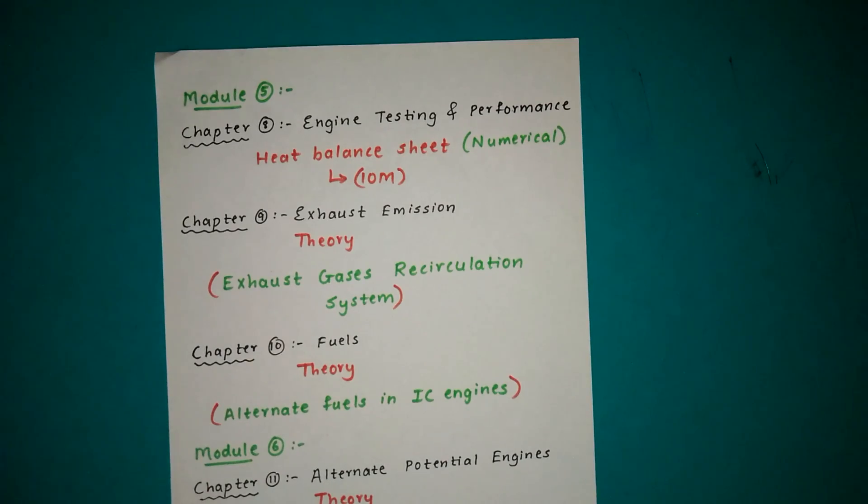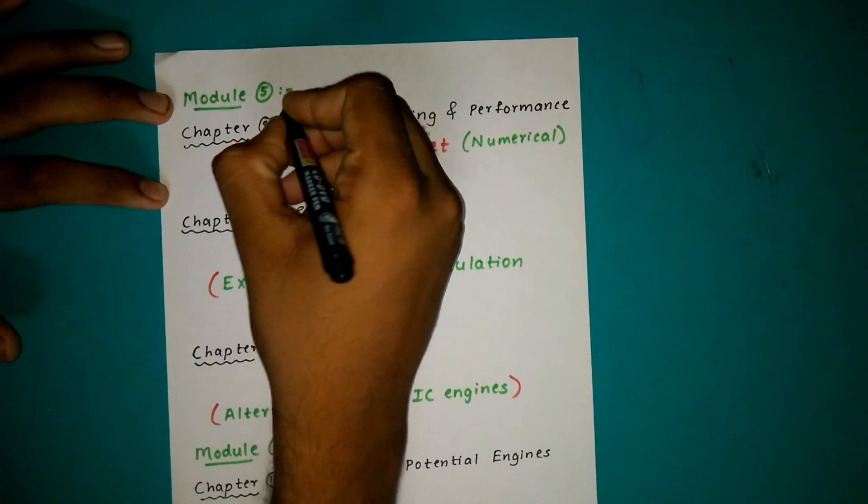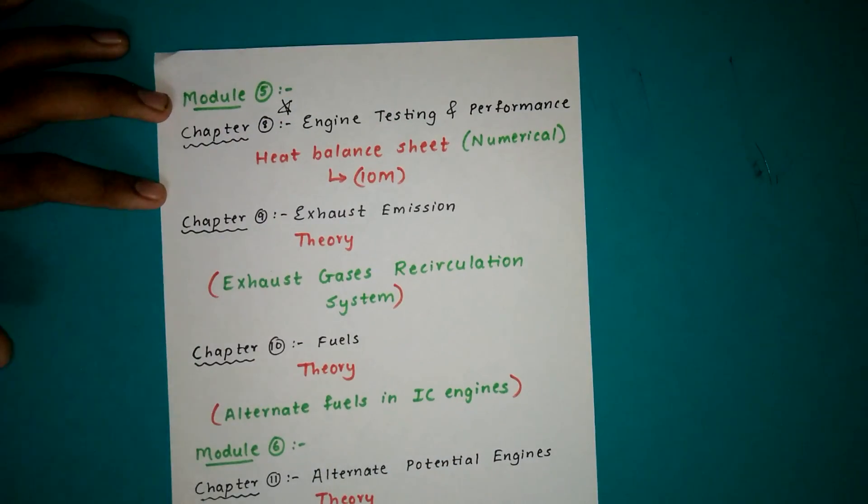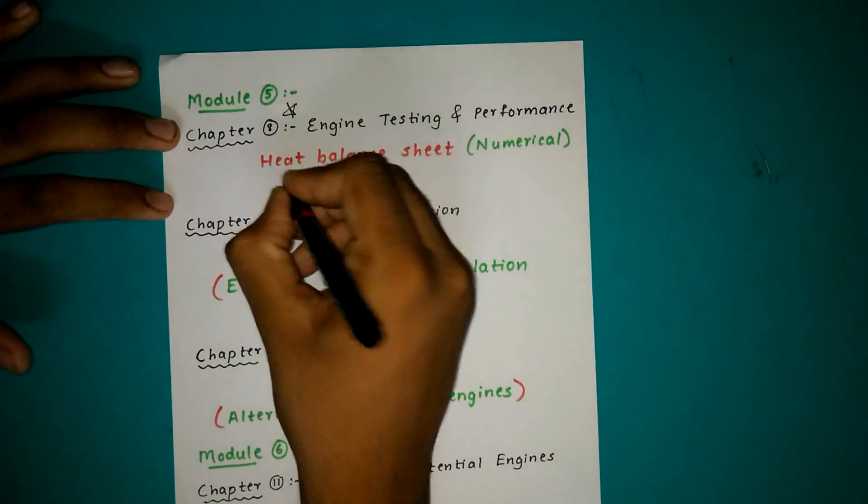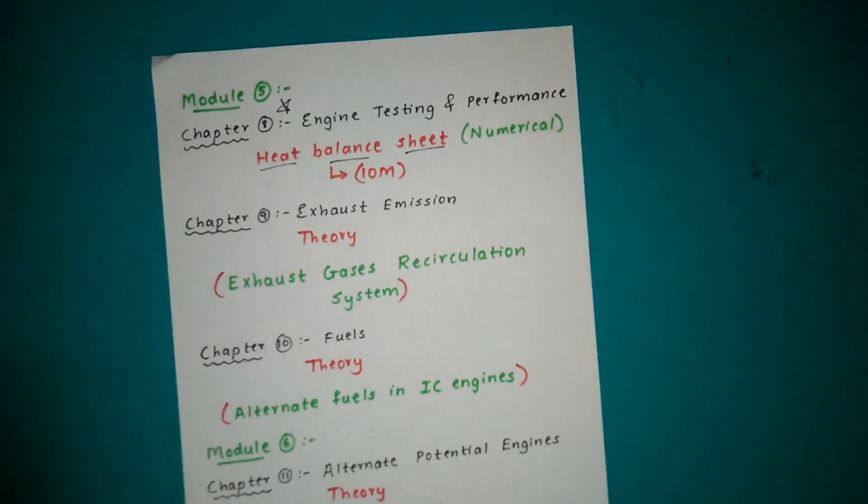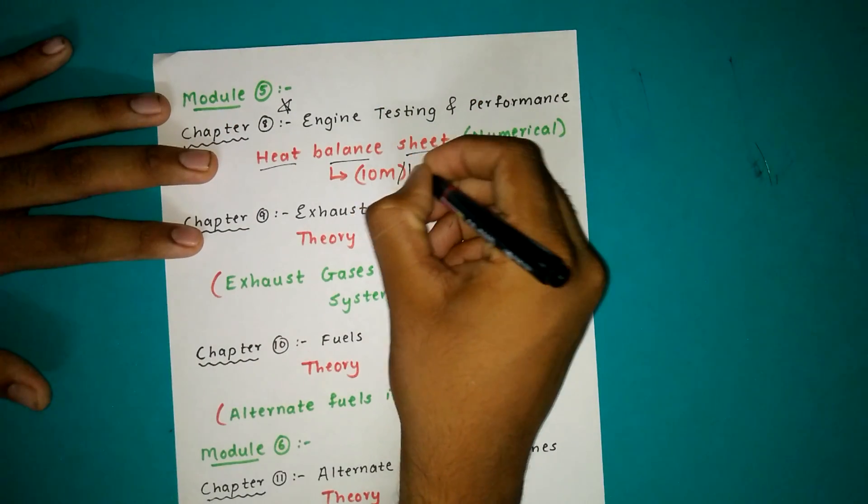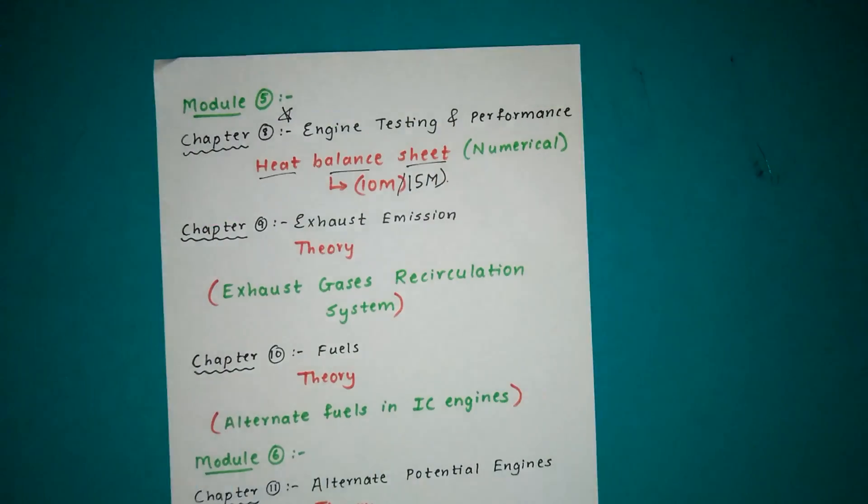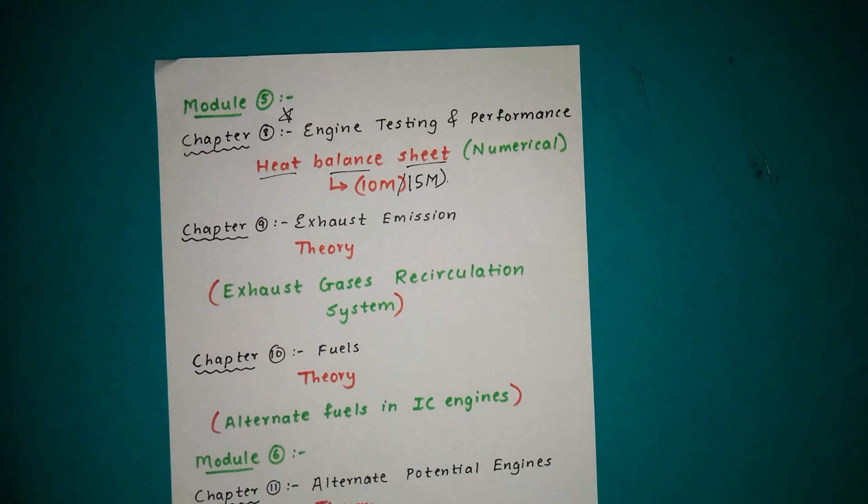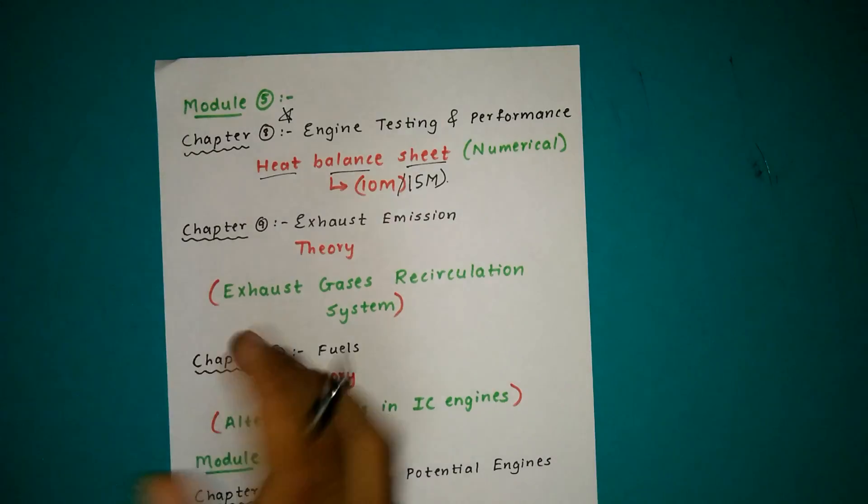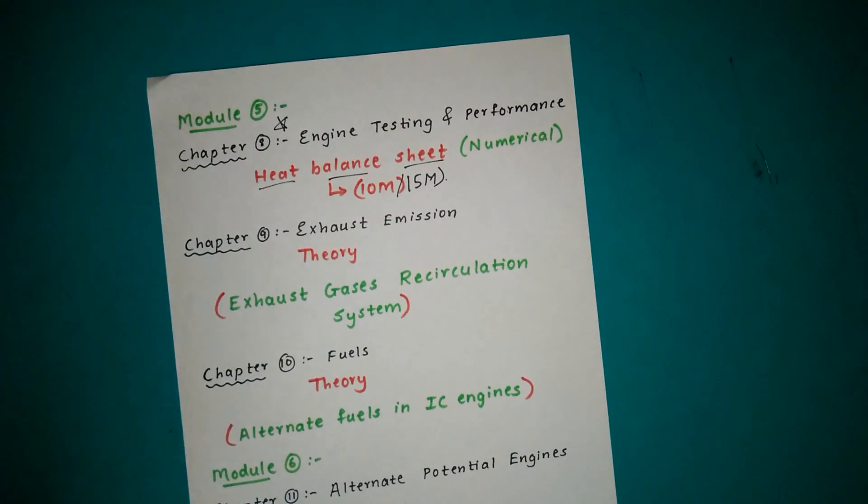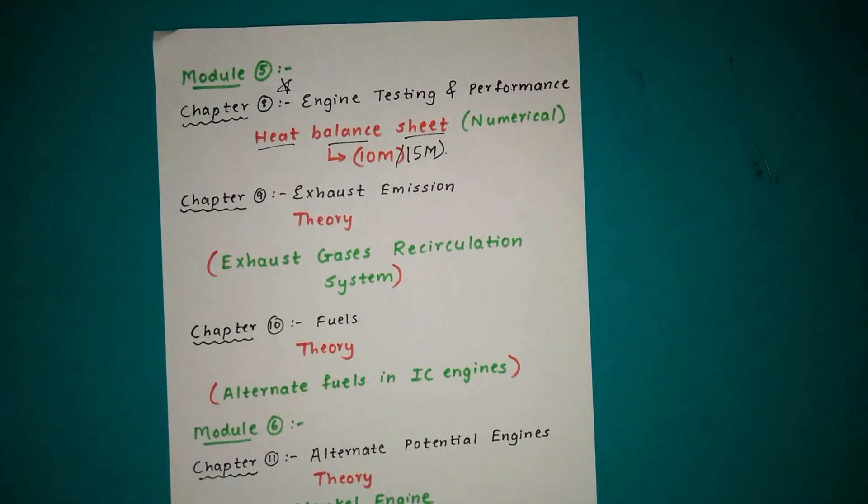Then comes Module 5, the most important module for IC Engine. There is a fixed question on Heat Balance Sheet in exam which is for 10 to 15 marks. Last time it was asked for 15 marks. The weightage depends upon the number of factors asked. The numerical is very easy, just go through it and solve it. It requires a lot of calculation work and formulas. There are fixed formulas for this.